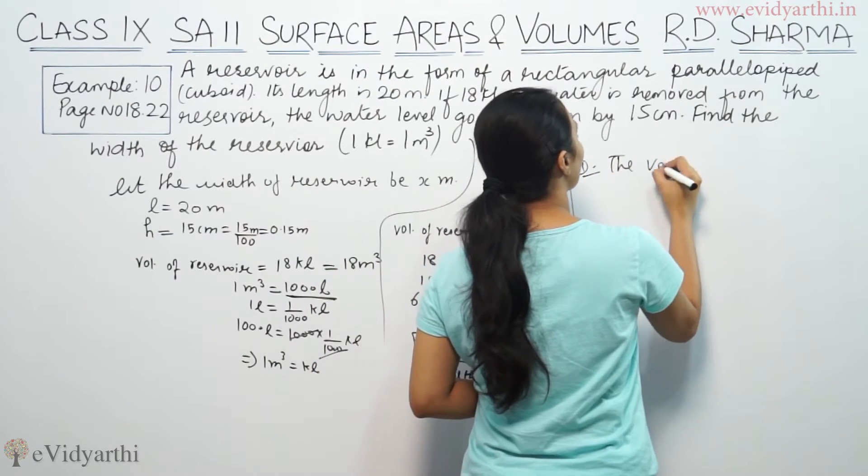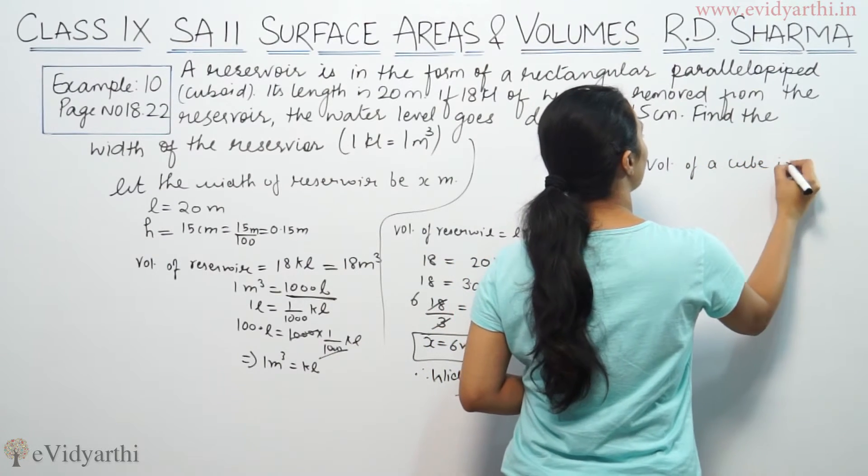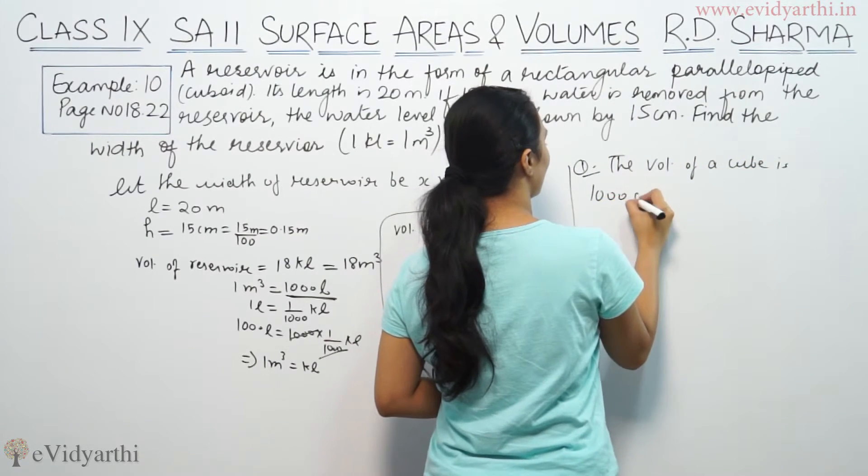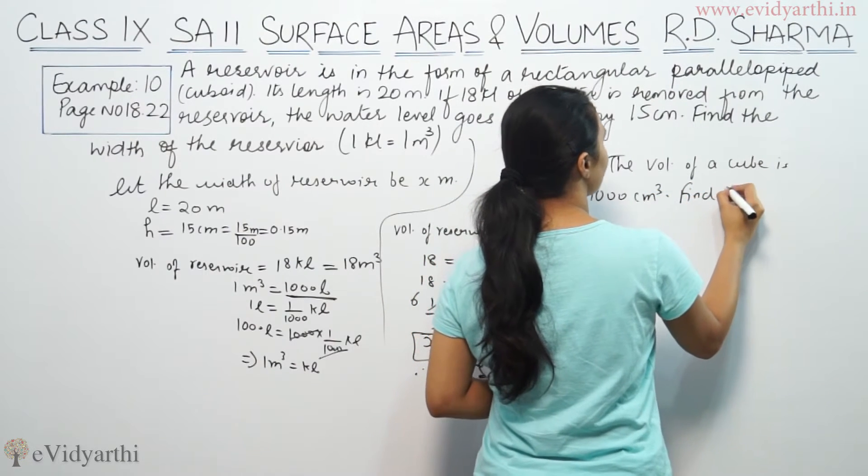The volume of a cube is 1000 centimeter cube. Find its total surface area.